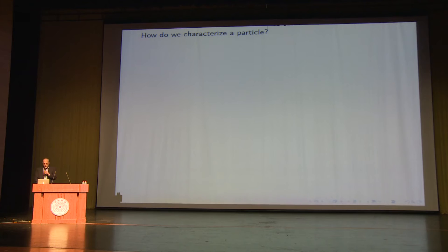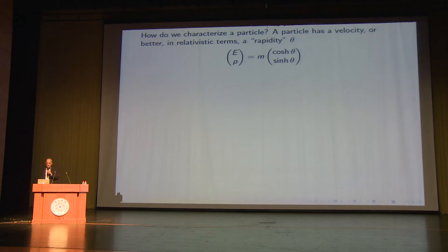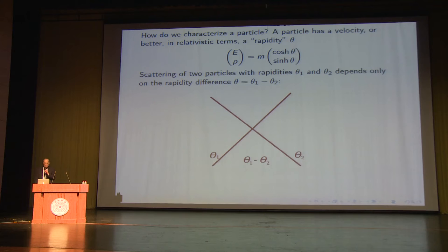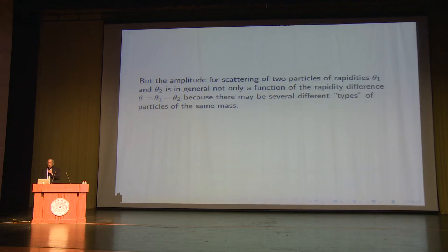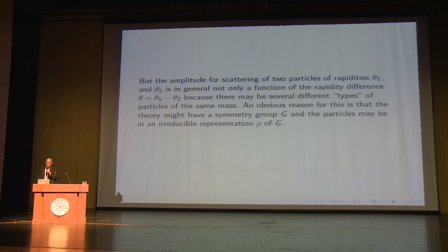How do we characterize a particle? A particle has a velocity, but in relativistic terms it's better to speak of the rapidity θ, where the energy and momentum are the mass times cosh θ and sinh θ. The scattering of two particles with rapidities θ₁ and θ₂ depends only on the rapidity difference θ₁ minus θ₂, which I'll call θ. That's the content of Lorentz invariance for two-to-two scattering. But the amplitude to scatter two particles of rapidities θ₁ and θ₂ is in general not only a function of θ, because there may be different types of particles of the same mass. An obvious reason for that is that the theory might have a symmetry group G, and the particles may be in some representation ρ of G.